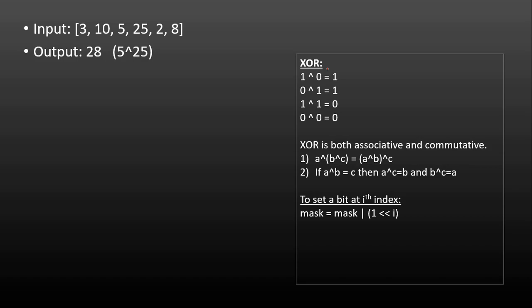XOR is both associative and commutative. For three numbers a, b, c you can place the bracket anywhere — just like addition. So a XOR (b XOR c) equals (a XOR b) XOR c. It's also associative, meaning if a XOR b equals c, then a XOR c equals b, and b XOR c equals a. We'll use this property in our problem.